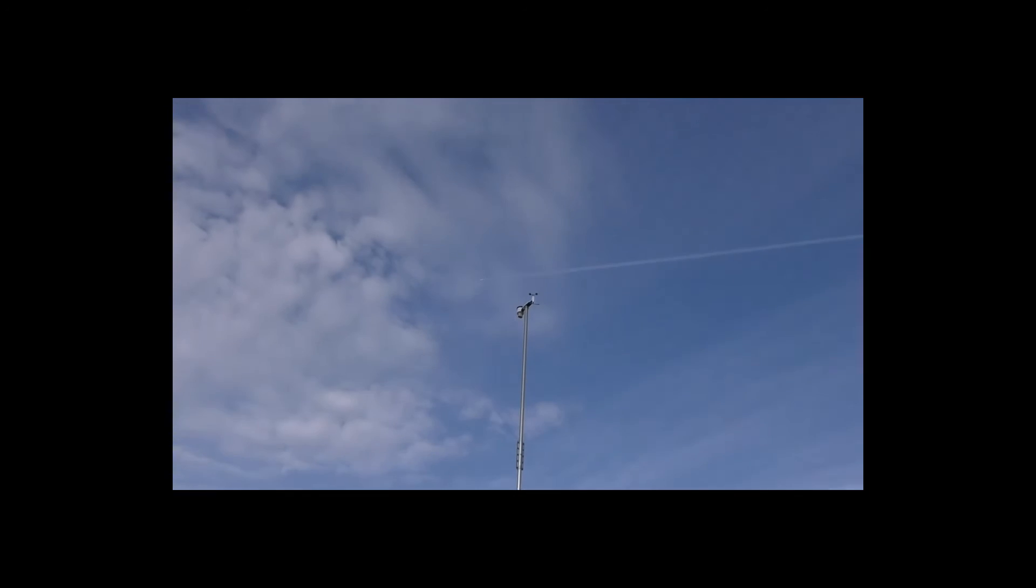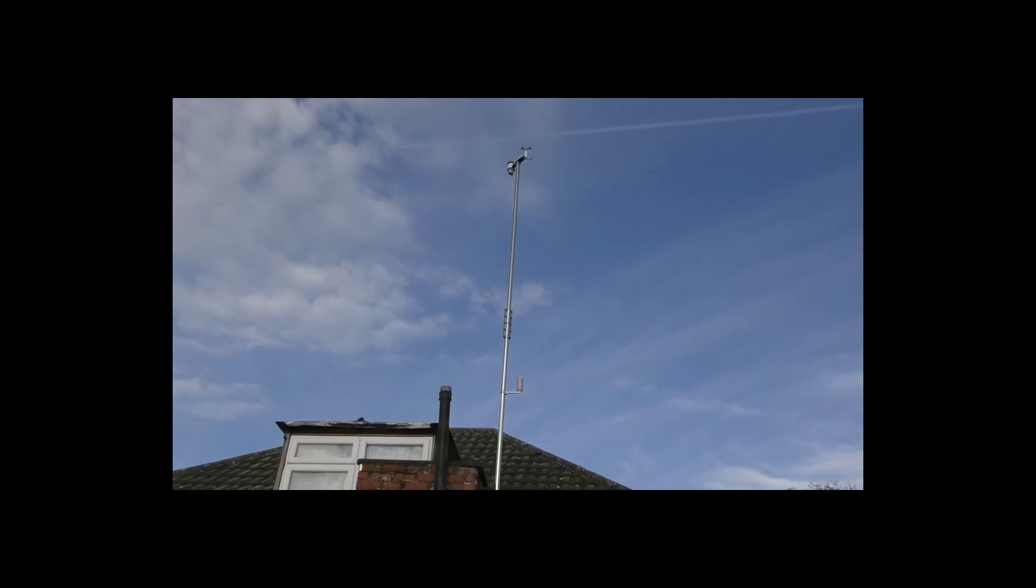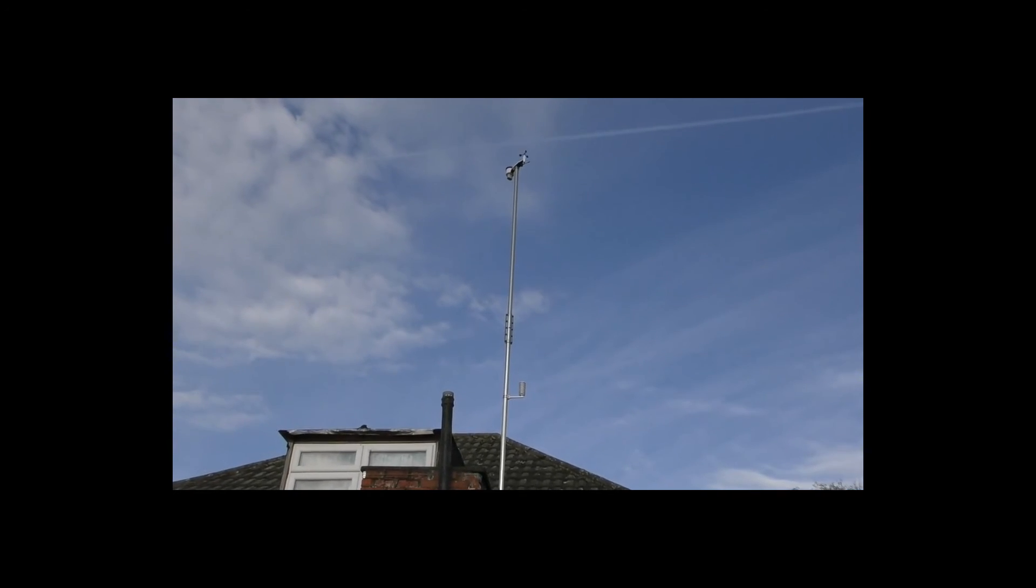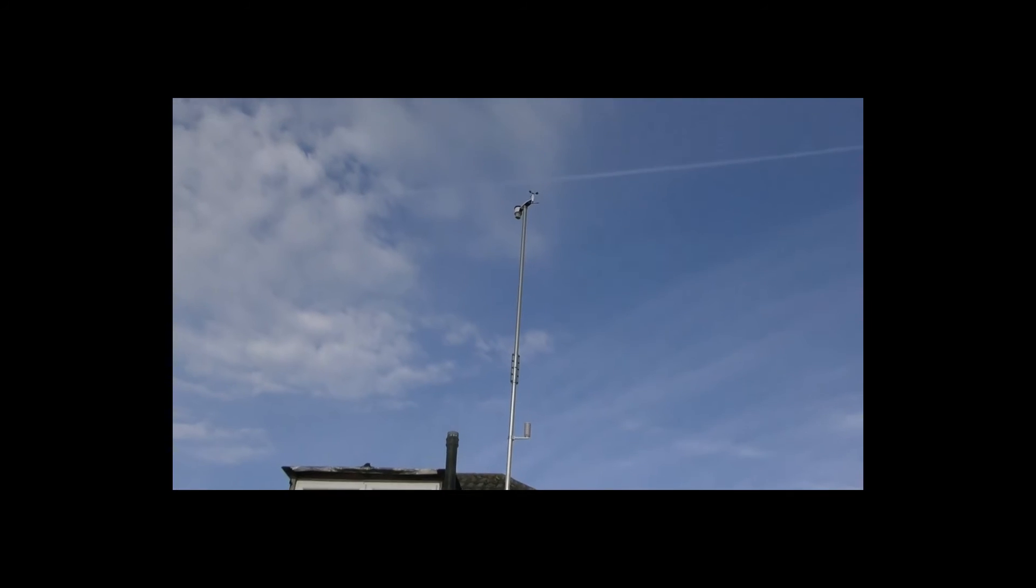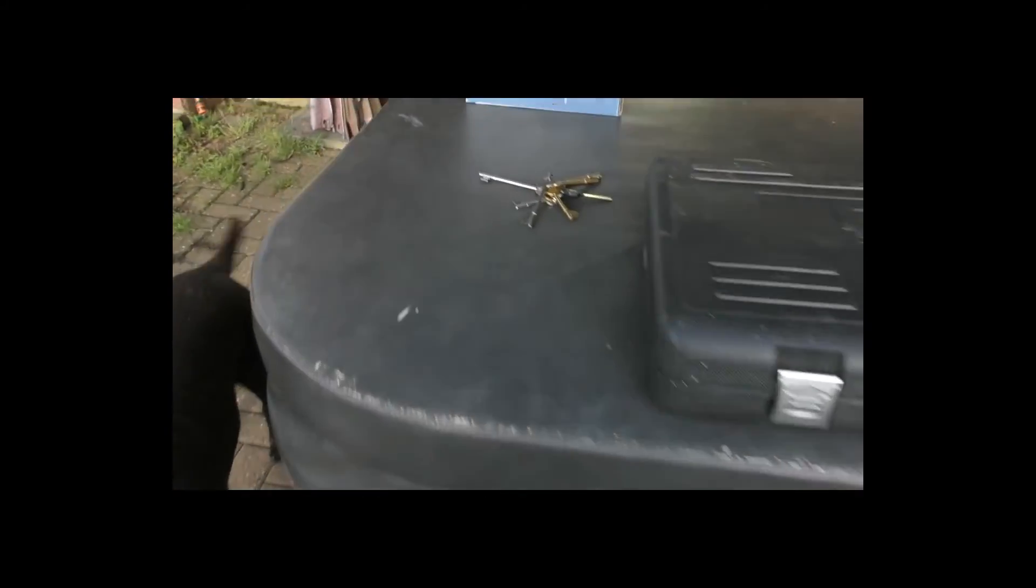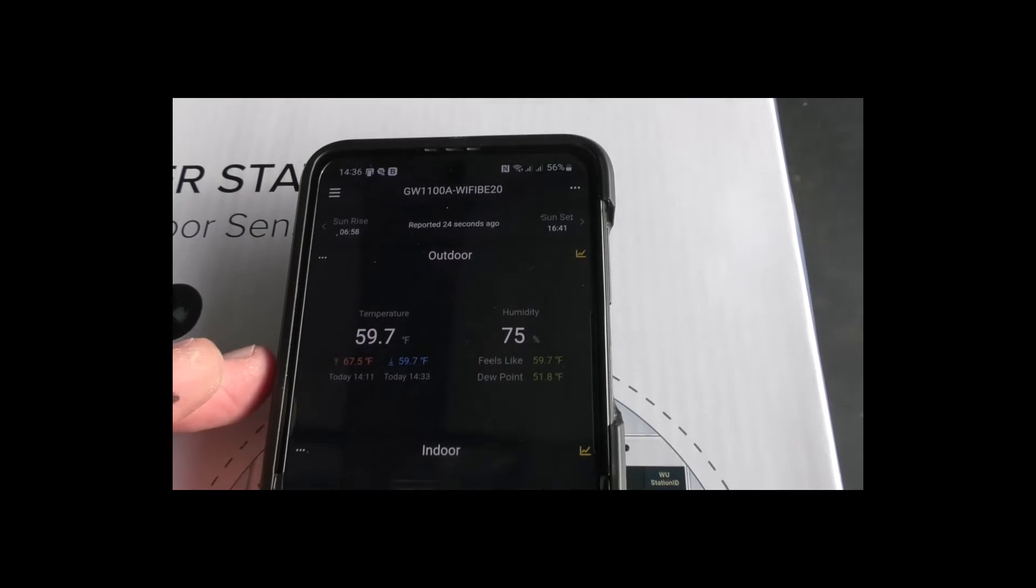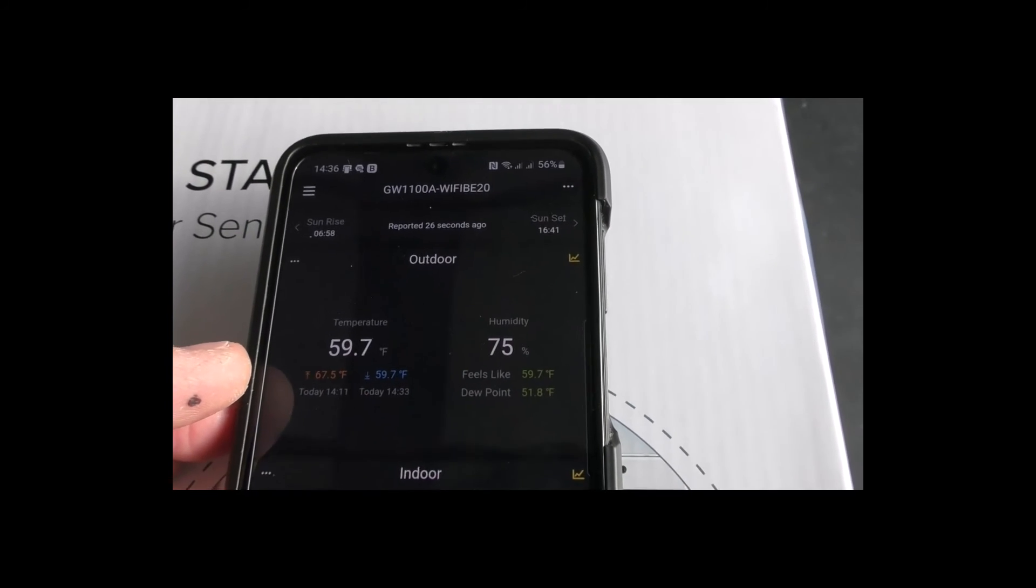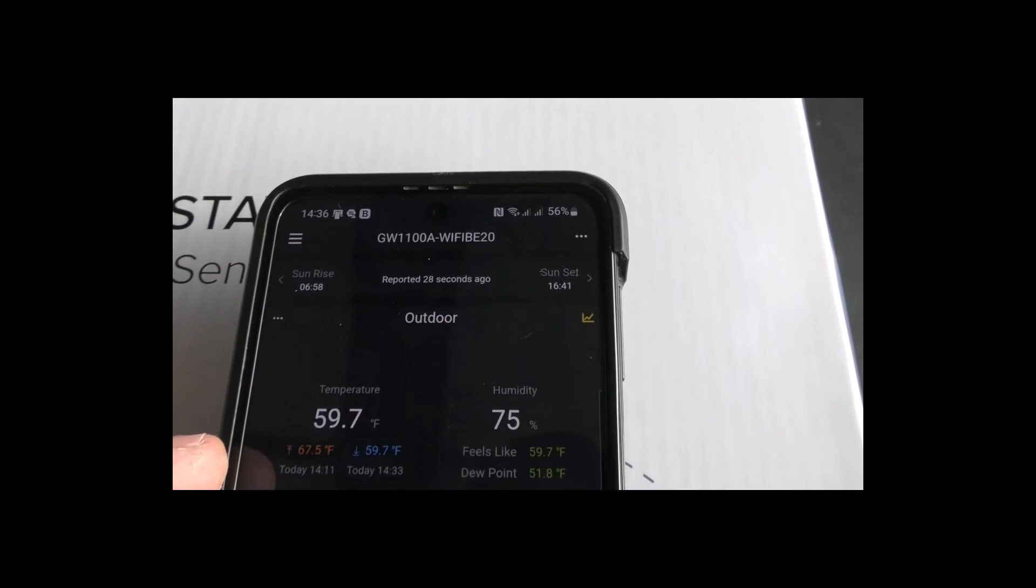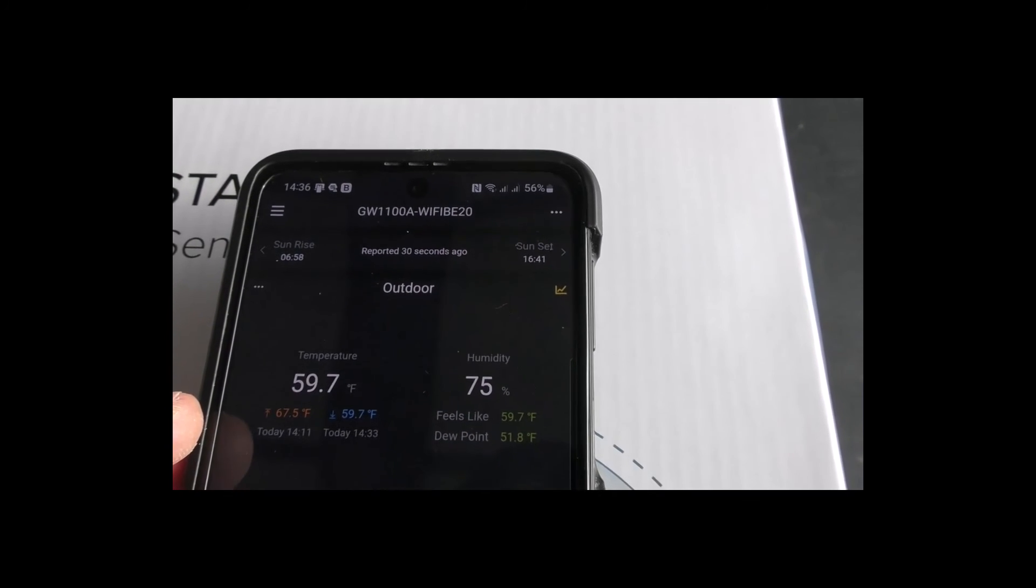We are done. We've got the lightning sensor a little bit lower down where I can easily reach it, and the main unit's right at the top on the mast. If we go back to the display, you can see outdoor temperature was last reported 28 seconds ago.